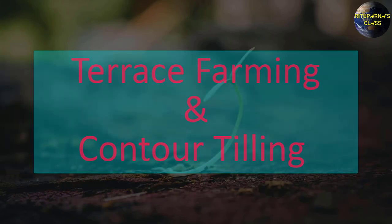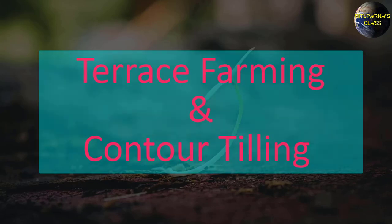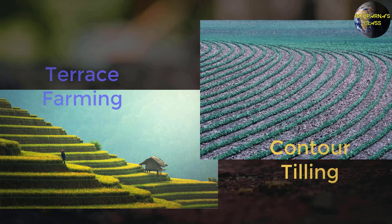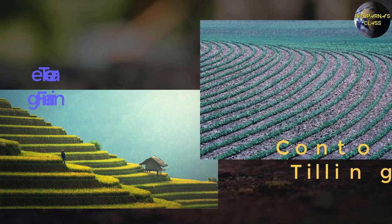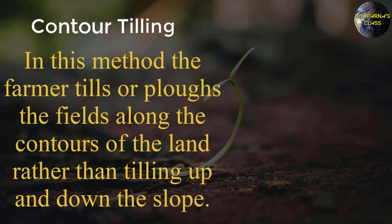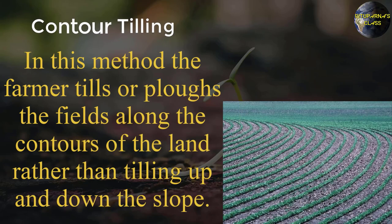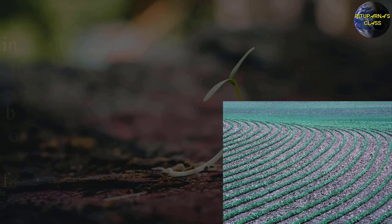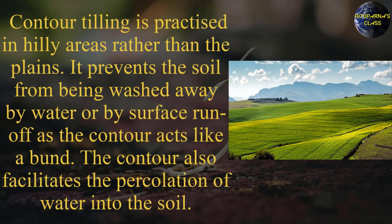Sometimes people get confused between terrace farming and contour tilling because both are almost the same. But remember, in contour tilling we don't make steps. In this method, the farmers till or plough the fields along the contour of the land rather than tilling up and down the slope. Contours are the imaginary lines which join the places having the same height. So contour tilling is practiced in hilly areas rather than the plains. It prevents the soil from being washed away by water or by surface runoff, as the contour acts like a bund.